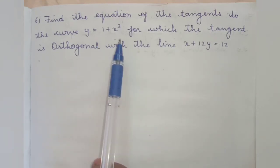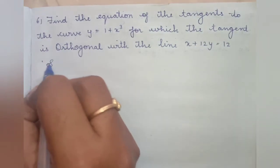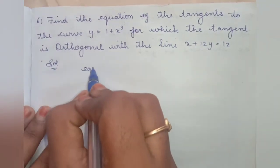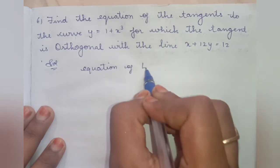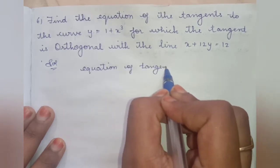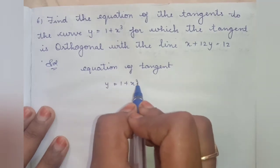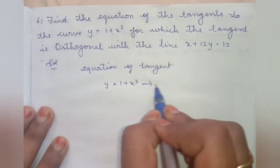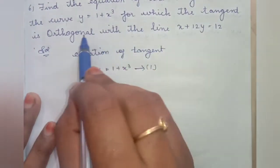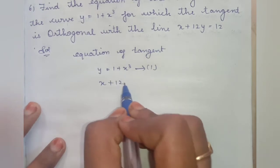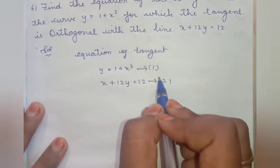Find the equation of tangent to the curve y = 1 + x³, for which the tangent is orthogonal with the line x + 12y = 12. This is equation 1 (the curve) and equation 2 (the line).